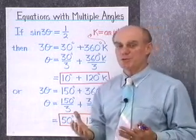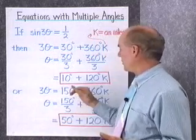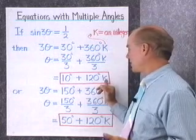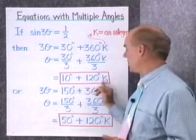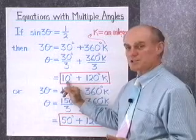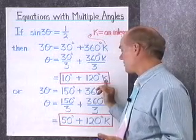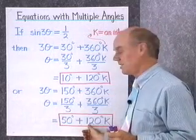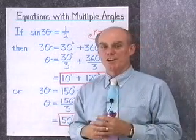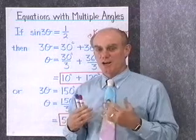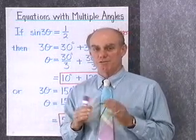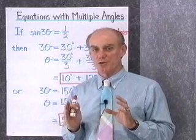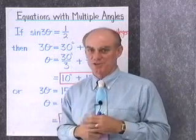If asked to find solutions between 0 and 360 degrees, substitute k equals 0 to get 10 degrees, k equals 1 to get 130 degrees, k equals 2 to get 250 degrees, and keep substituting until exceeding 360. Do the same for the other expression. When you have multiple angles, the easiest approach is to first write expressions for all solutions, then find the ones between 0 and 360.